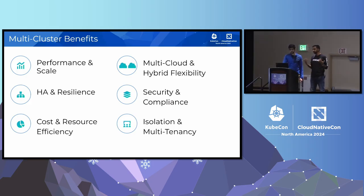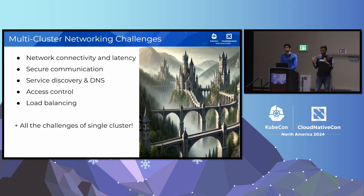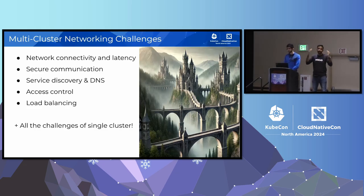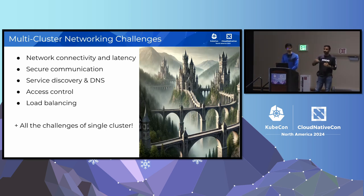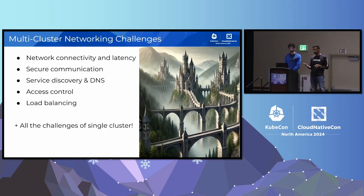Regardless of your strategy, you need to solve the network connectivity problem between clusters. As Tim Hawkins said, a Kubernetes cluster is like a city or a castle — inside the city you have roads, a DMV, gates, all the benefits of civilization. But as soon as you leave the cluster, it's a jungle. To connect these different cities together, you have to figure out: do you want to build a road, a tunnel, or a bridge? You need to solve that connectivity problem first.